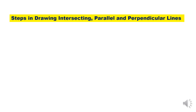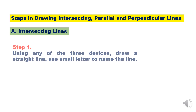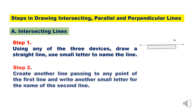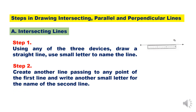Steps in drawing intersecting, parallel, and perpendicular lines. For intersecting lines: Step 1 — using any of the 3 devices, draw a straight line and use a small letter to name the line. Step 2 — create another line passing through any point of the first line and write another small letter for the name of the second line.